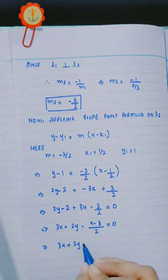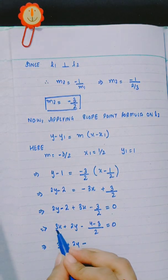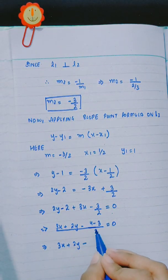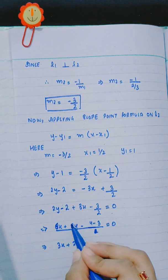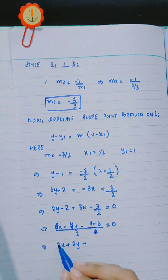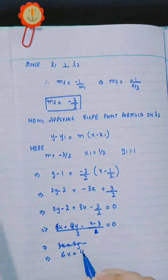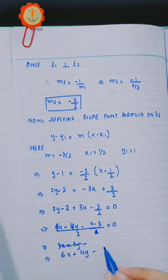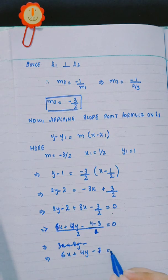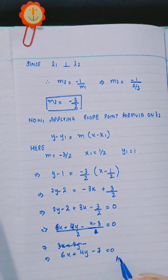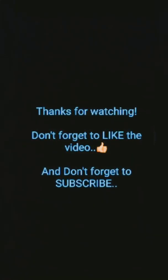Taking the LCM, we get 6X plus 4Y minus 4 minus 3, which simplifies to 6X plus 4Y minus 7 is equal to 0. So the final equation is 6X plus 4Y minus 7 equals 0.